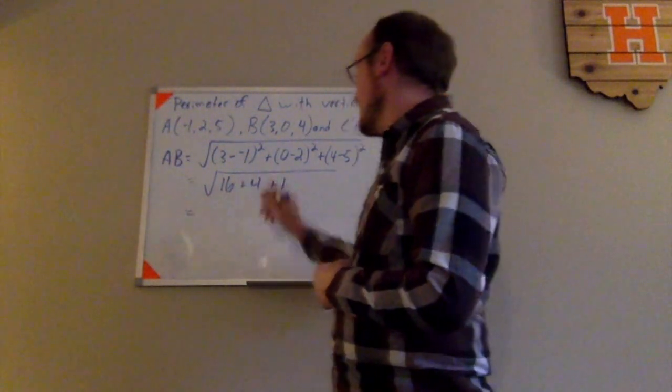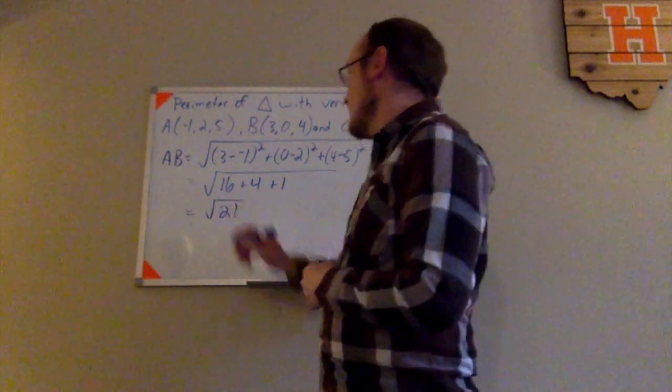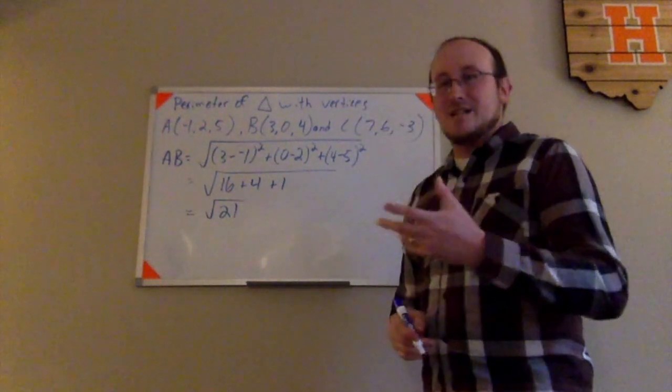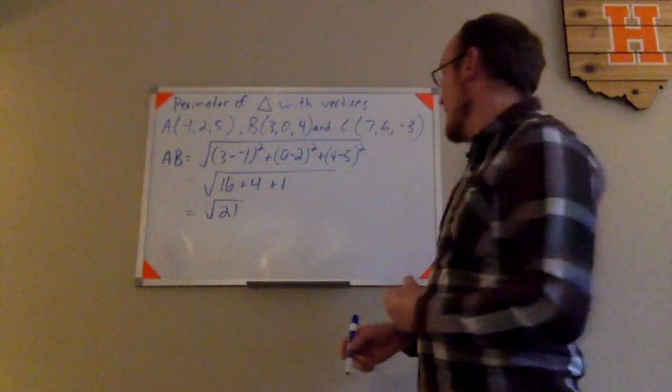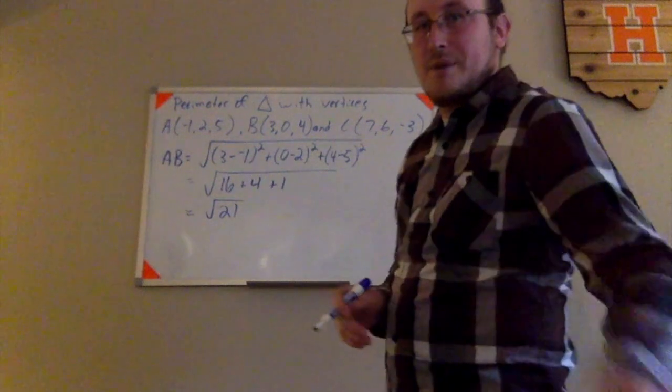So here I have 16 plus 4, which is 20, plus 1, which is 21. I have the square root of 21. That's the exact length of side AB. I'm going to go ahead and leave that over there off to the side so I don't forget about it.